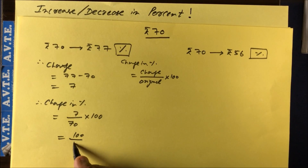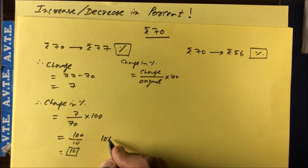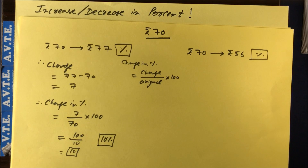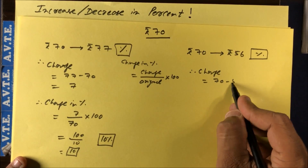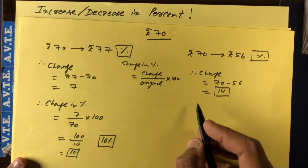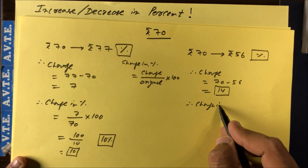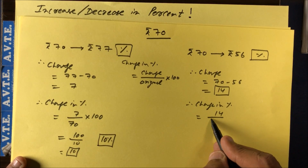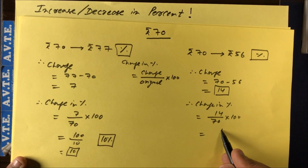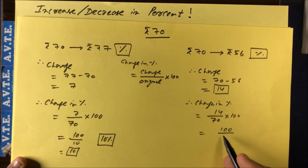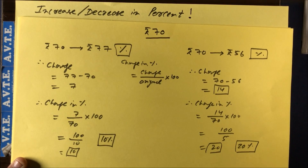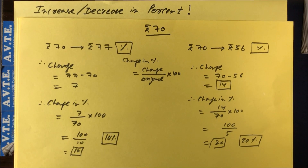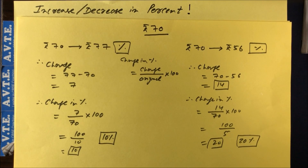That is 7/70 into 100, which gives 10% increase. For the decrease case, the price decreased by 14 rupees. So change in percentage is 14 upon 70 into 100, that is 20% decrease. I hope you understood this concept of increase or decrease in percentage.